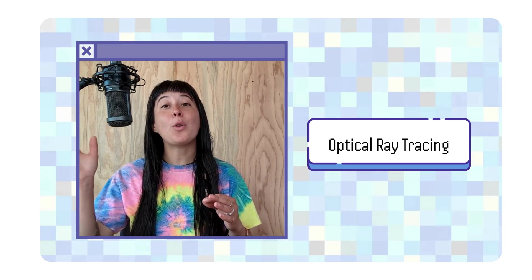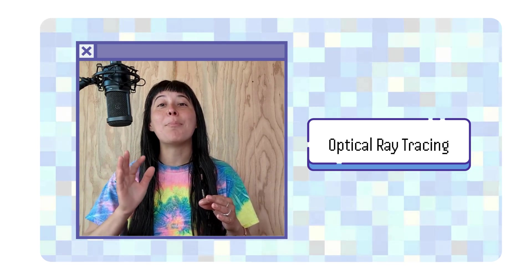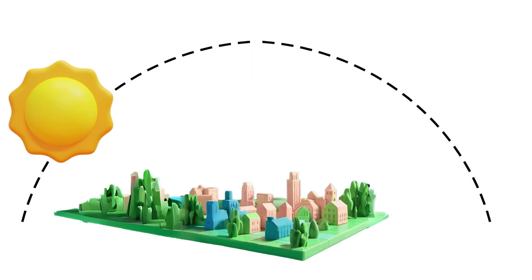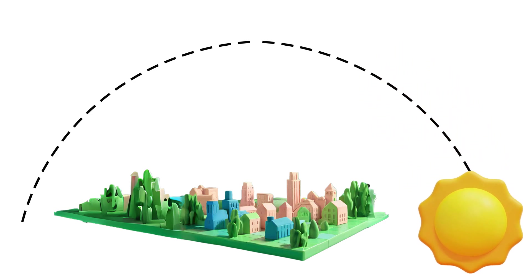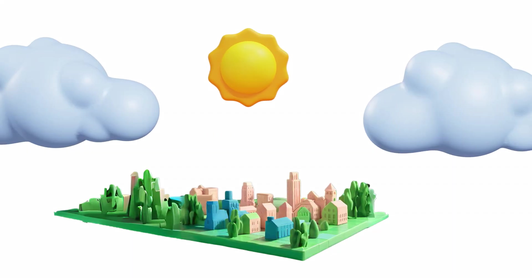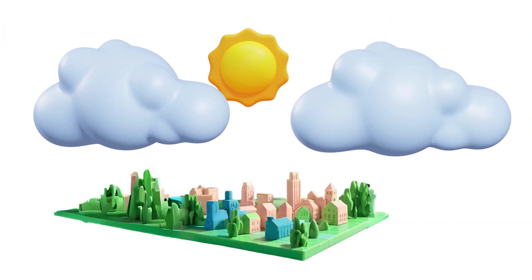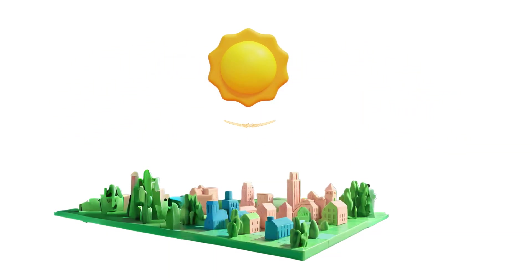Optical ray tracing is also performed to model the path of the sun. This is a method for producing visual images that simulate the physical behavior of light. This offers detailed information about a building and nearby objects like trees and other structures to determine shade patterns on its roof, and clouds are removed from images whenever possible.